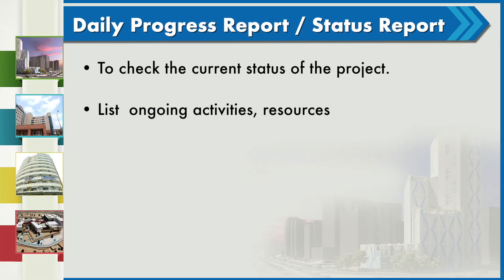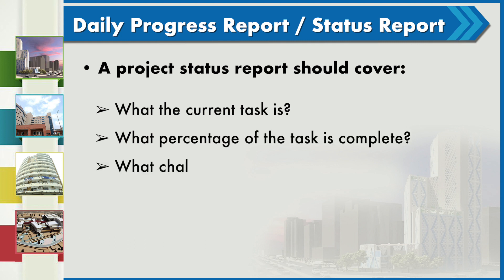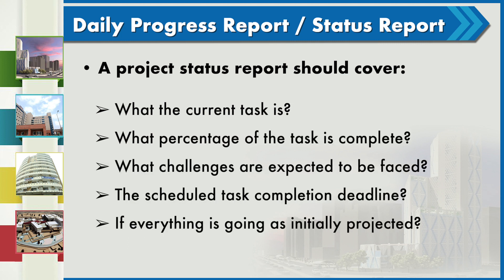The daily progress report or status report is used to check the current status of the project, including the list of ongoing activities, resources mobilized, labor occupied, challenges incurred, and other details for current executions. The project status report should also cover the current task, percentage of task completed, expected challenges, scheduled task completion deadline, and whether the projected plan is on timeline.